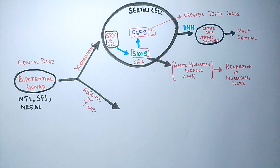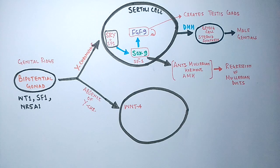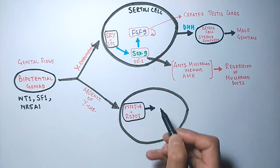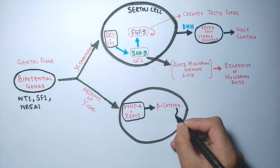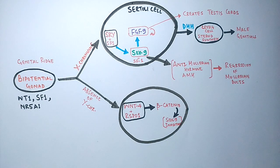In the XX condition, the absence of Y chromosome means SRY does not activate FGF9, so WNT4 remains active. WNT4 works with RSPO1 to initiate the WNT signaling pathway, resulting in the synthesis of beta-catenin. Beta-catenin in turn inhibits SOX9 — which is essential for AMH synthesis. Therefore, with SOX9 inhibited and no Y chromosome present, synthesis of anti-Müllerian hormone is also inhibited.